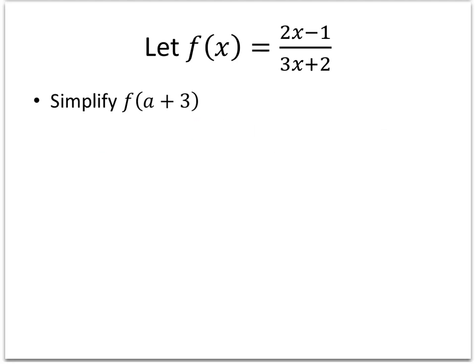So in this example, now we're asked to simplify f(a+3). Now we don't know what that mysterious letter a is, but we can still use the same principle to figure out what that would be. Whatever is inside my parentheses, in this case it's a plus 3, rather than a simple number inside, now I have some algebraic expression. But the rule doesn't change. We still have 2 times, and I'm just going to use parentheses here, a plus 3, minus 1...